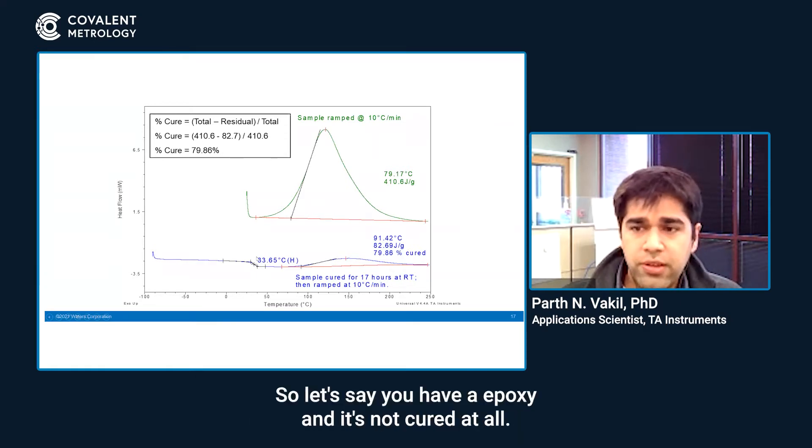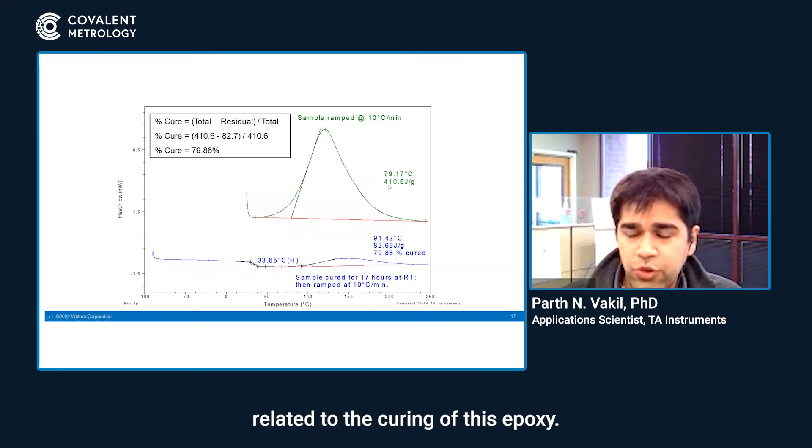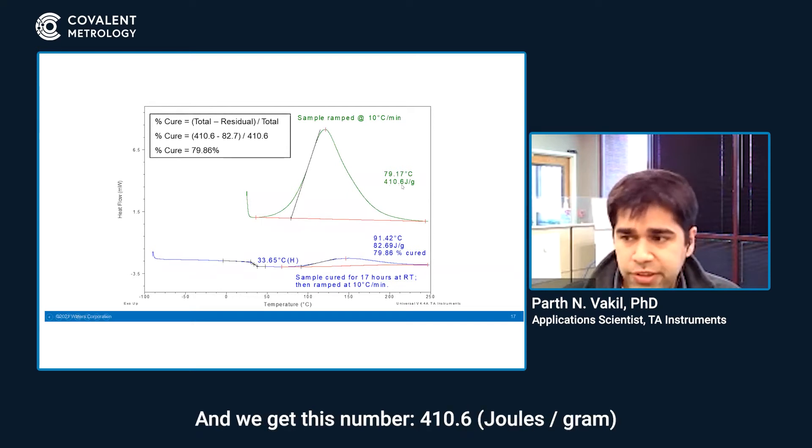Let's say you have an epoxy that's not cured at all. You run it on the DSC, capture the entire exotherm, find out the total enthalpy related to the curing of this epoxy, and we get this number 410.6.